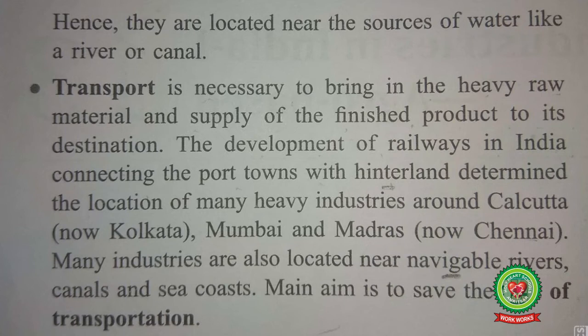Next is transport. Transport is necessary to bring in heavy raw materials and to supply the finished product to its destination. The development of railways in India connecting the port towns and hinterland — meaning the inner areas — has determined the location of many heavy industries around Kolkata, Mumbai and Chennai. Many industries are also located near navigable rivers, canals and sea coasts. The main aim is to save the cost of transportation so that the finished goods can reach the places where they are required.